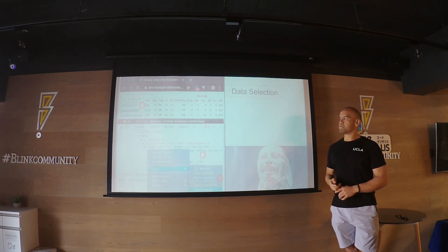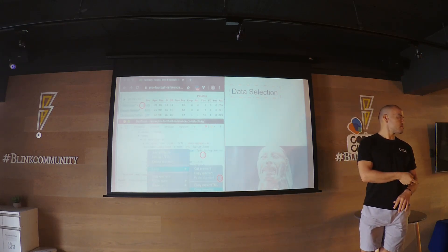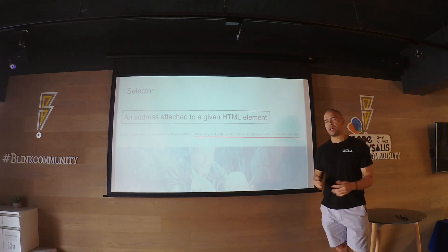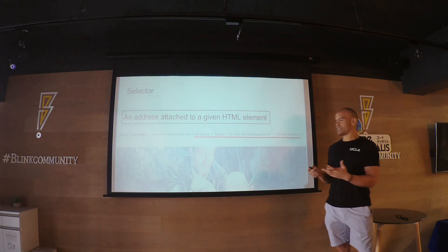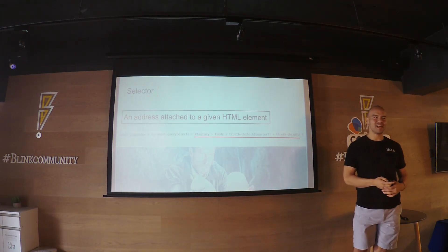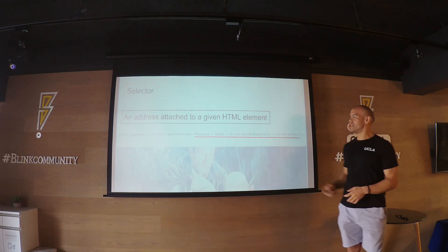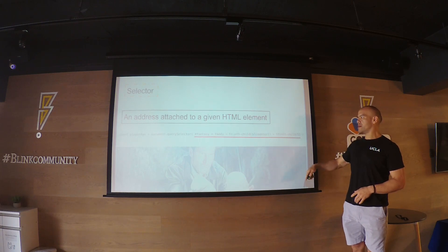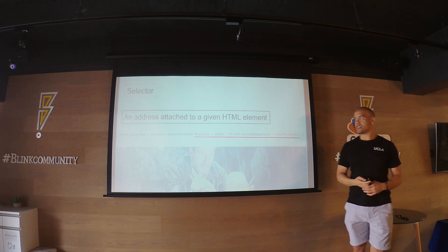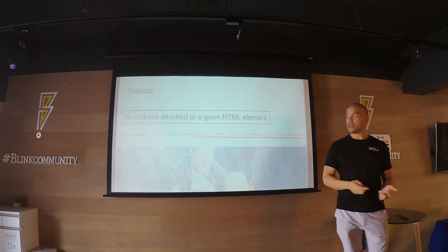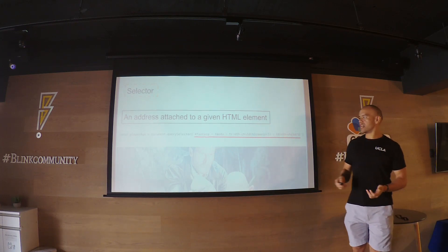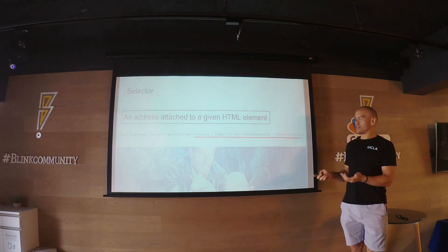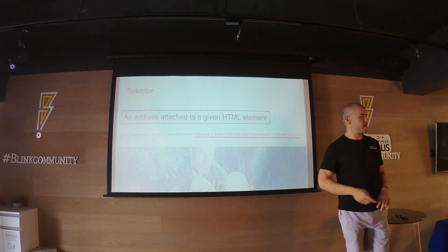A quick note on a selector - it's basically an address pointing to the specific HTML element you'd like to access. In my data script, the selector marked in red is the address I used to get the player's age, which is deeply nested under an ID of 'fantasy' within a body within a row.